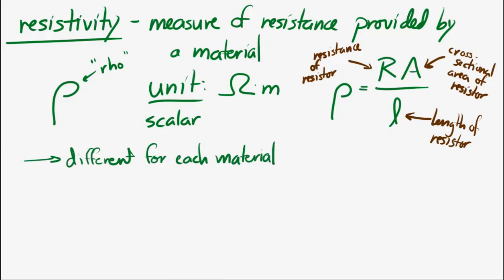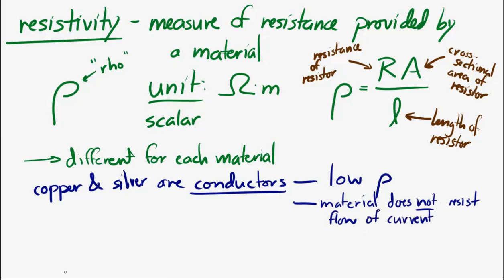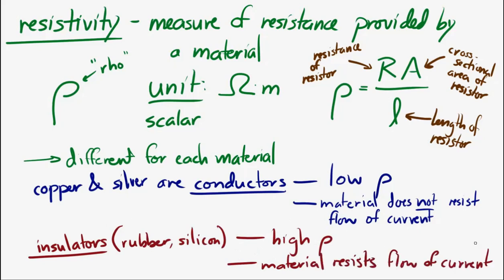For instance, copper and silver, which are both conductors, have very, very low resistivities. Resistivity tells you how much resistance is provided by a material — and conductors don't resist very much. They don't resist the flow of electrons, so conducting materials will have very low resistivity. Insulators, however, will have very high resistivities because those materials do oppose the flow of current; they will provide a lot of resistance.